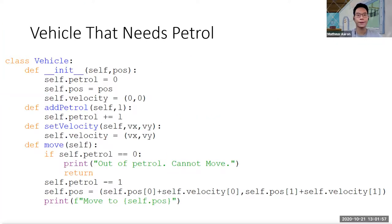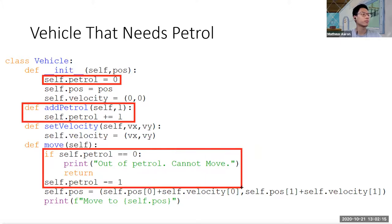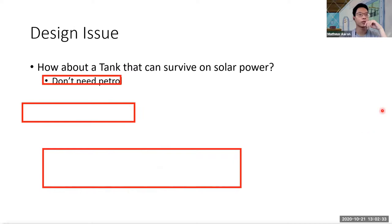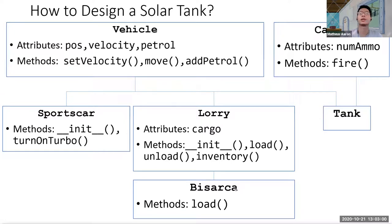This is what we do — let me highlight the changes. We add self.petrol here, we add add_petrol, and now when we move we check first whether we have enough petrol or not. These are the changes. Now comes the next question: how about a tank that can survive on solar power? Say we're in 2050 and tanks harness energy from solar panels on top, and do not need a petrol tank at all. How are you going to design it? How are you going to make changes to our earlier design? Any ideas?